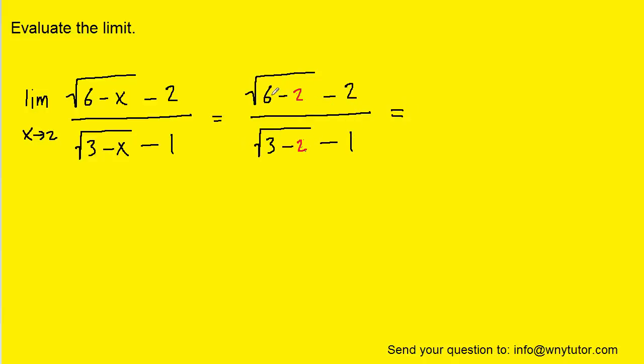So after plugging in 2, we can simplify the numerator. We're going to have the square root of 4, which of course is 2, and then 2 minus 2 gives us 0. And then we have the square root of 1, which is 1, minus 1, which is also 0. So we're left with 0 divided by 0, which is known as an indeterminate form.